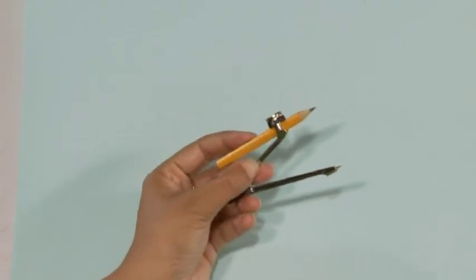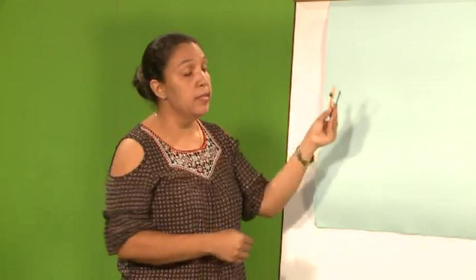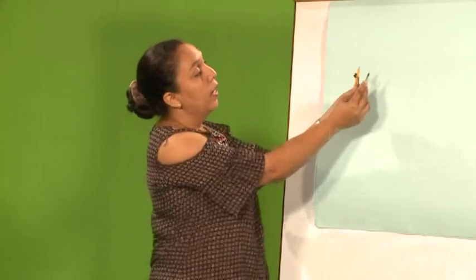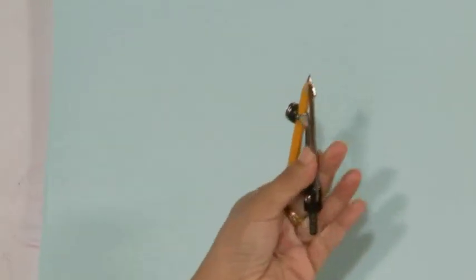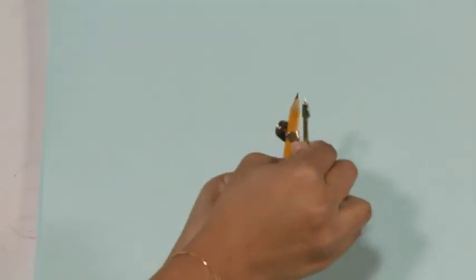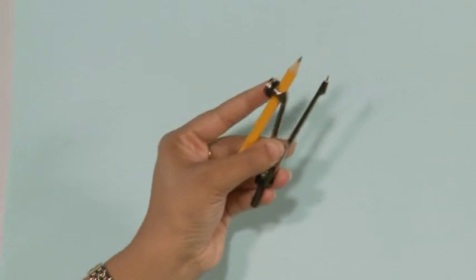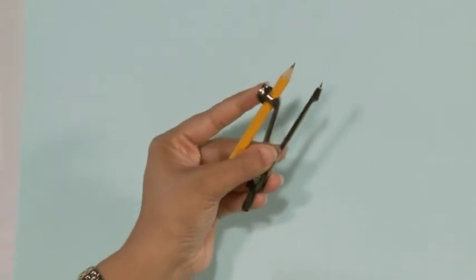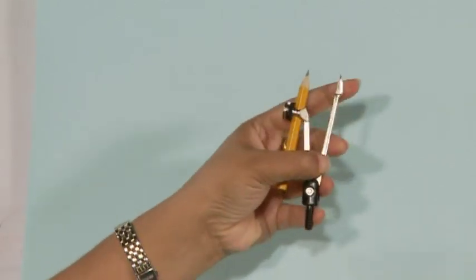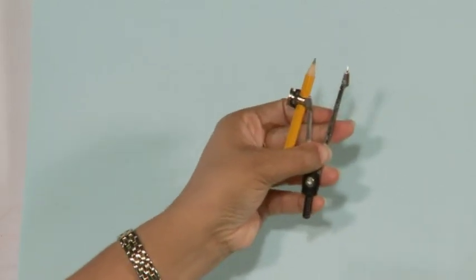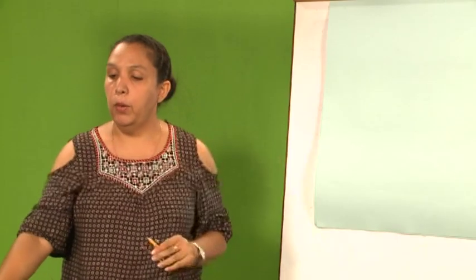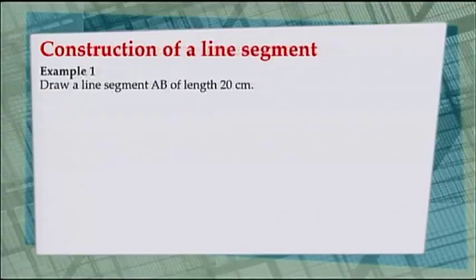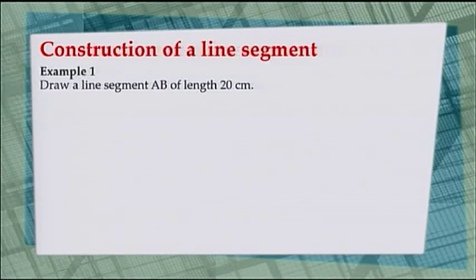Finally, always align the pencil with the needle — the pencil should always be aligned with the needle. Now, let's move on to see how to construct a line segment.